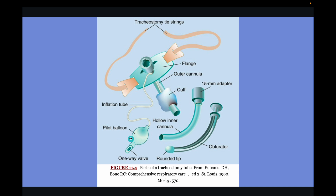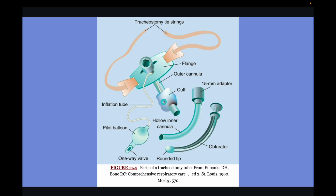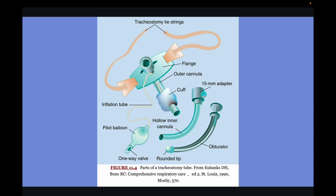The pilot balloon indicates how much the cuff is inflated. However, we do not rely on feel alone — we use a manometer. The cuff pressure must be maintained at 25 mmHg, because too much pressure can cause tissue issues, and too little can cause air leak and allow secretions to enter the trachea.